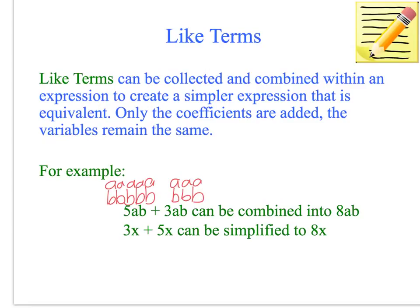Now this other example here, 3x plus 5x. We're remembering that we're only adding the coefficients. So 3 plus 5 is 8x. Because when you've got 3 x's and 5 x's, the total number of x's is 8. So that is how we simplify and collect the like terms.